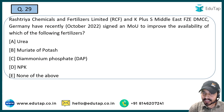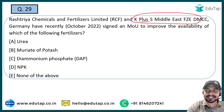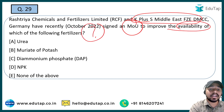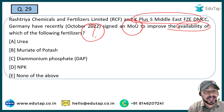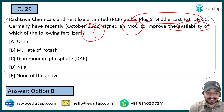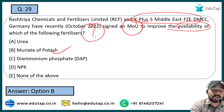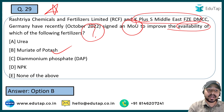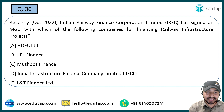The next question: Rashtriya Chemicals and Fertilizers Limited and K Plus Middle East FZE/DMCC Germany have recently signed an MOU to improve the availability of which fertilizer? The right answer is Muriate of Potash. All NABARD Grade A aspirants should kindly note down this question.